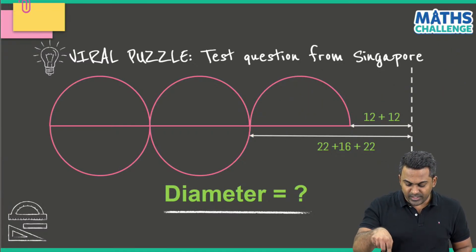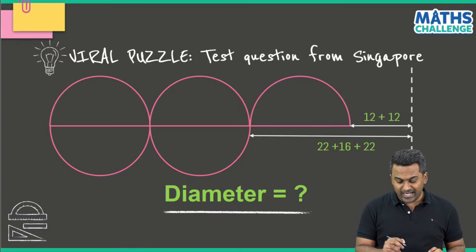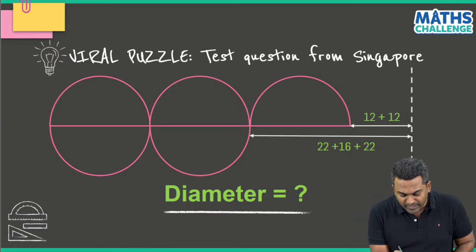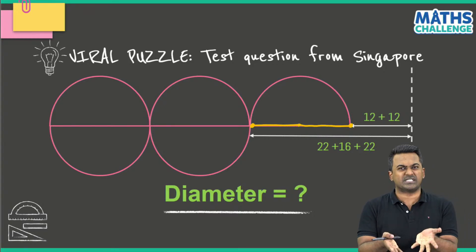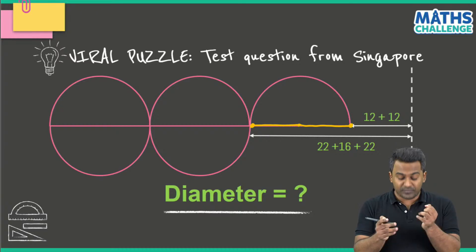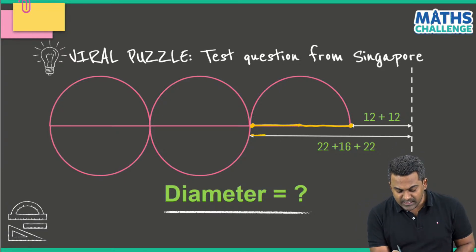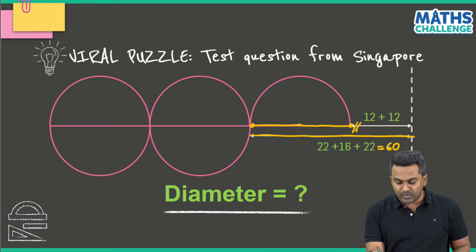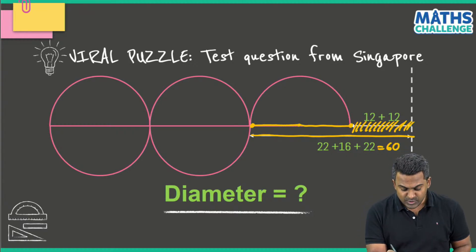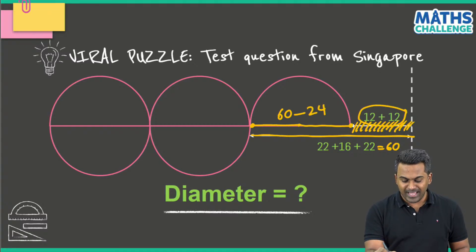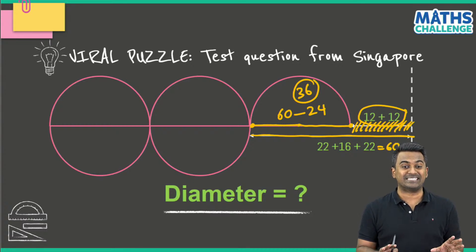This is the final situation after moving all the semicircles to the left. We have to figure out the distance from this point to this point, because this is the diameter of the semicircle. From this complete distance of 60, I cut out this bit of 24. The leftover part is the diameter, which is 60 minus 24, equal to 36.